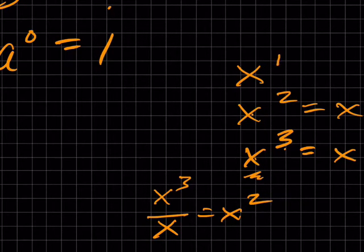Similarly, if I get to x to the one, I'm going to divide this by x to get that. Let's skip the next one, x to the zero, and we'll come back to it.